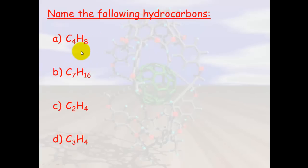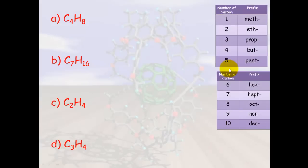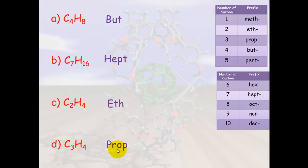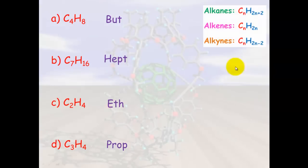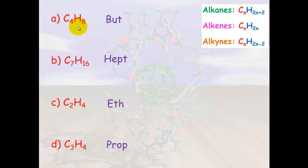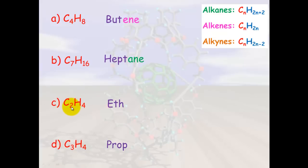Now let's name some hydrocarbons. For C4H8: four carbons gives the prefix but-. Checking the formula — 2 times 4 is 8, which fits CnH2n — so it must be butene. For C7H16: seven carbons gives hept-. 7 times 2 is 14 plus 2 is 16, which fits CnH2n+2, so it's an alkane: heptane. For C2H4: 2 times 2 is 4, fitting CnH2n, so it's ethene. For C3H4: 3 times 2 is 6 minus 2 is 4, fitting CnH2n-2, so it's propyne.